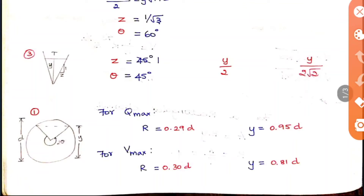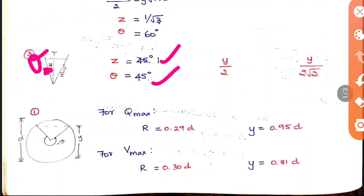For a triangular section, slope equals 1 and theta equals 45 degrees. The depth d equals y/2 and r equals y divided by 2 root 2. For a circular section, two conditions apply: for maximum discharge, r equals 0.29 times diameter and y equals 0.95 times diameter; for maximum velocity, r equals 0.3 times diameter and y equals 0.81 times diameter.